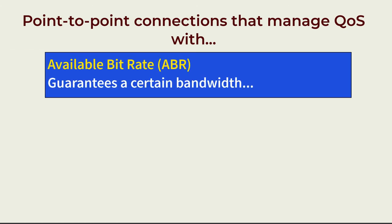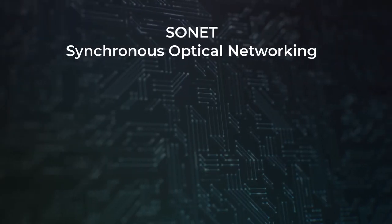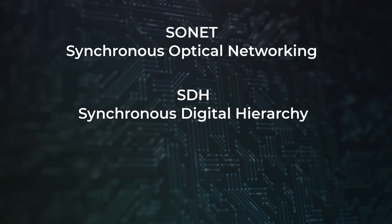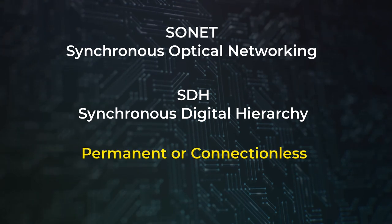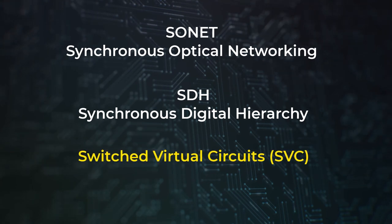Available Bit Rate, or ABR, guarantees a certain bandwidth. And Unspecified Bit Rate, or UBR, is the bandwidth available outside the available bit rate. A core protocol used over Synchronous Optical Networking, or SONET, and Synchronous Digital Hierarchy, or SDH, ATM WANs can be provisioned as a permanent circuit or as a connectionless service, with a service provider implementing a VLAN in the cloud. Service providers can also provide ATM service via switched virtual circuits, or SVCs, already covered in this lesson.